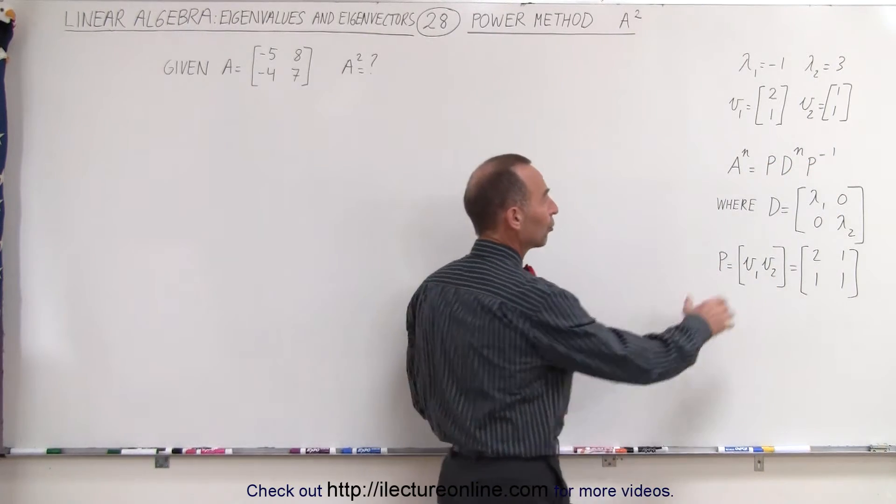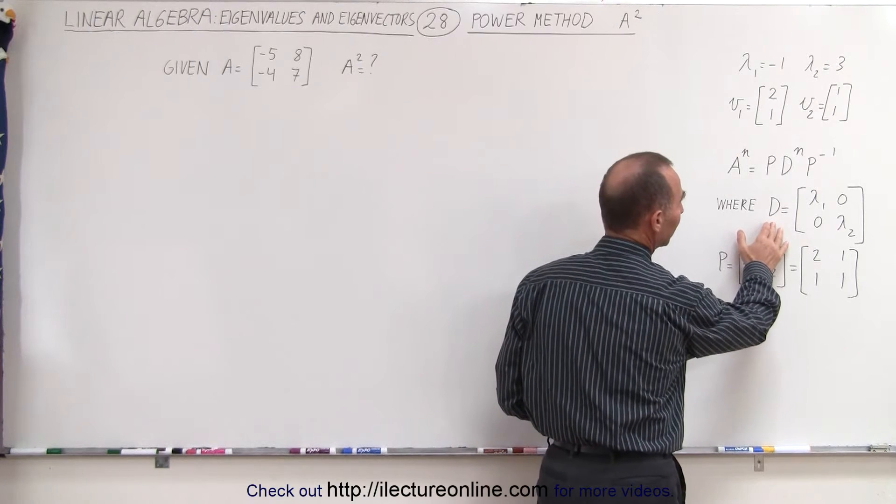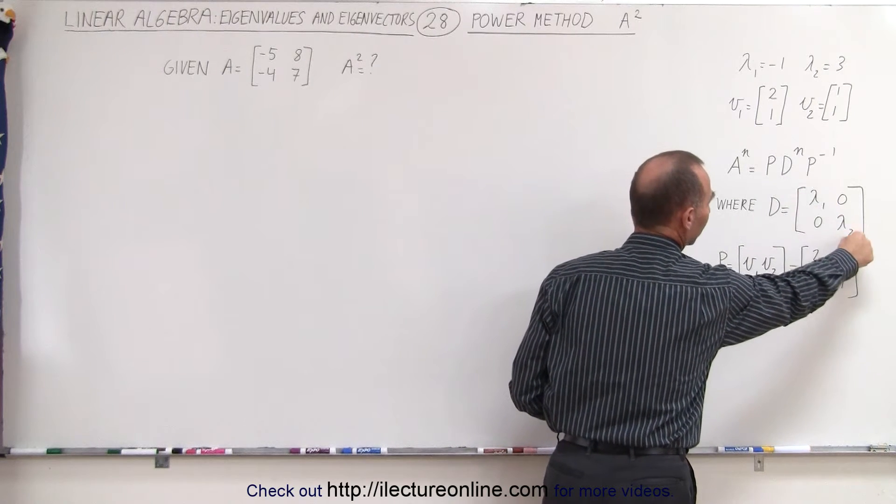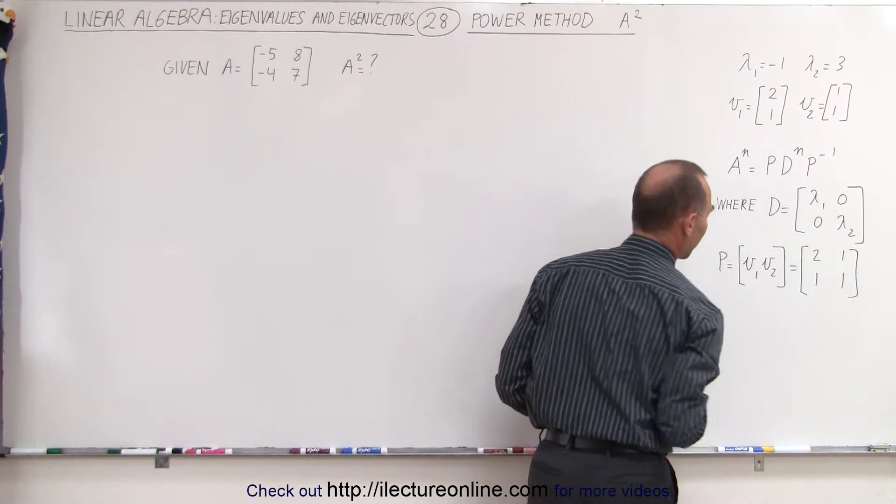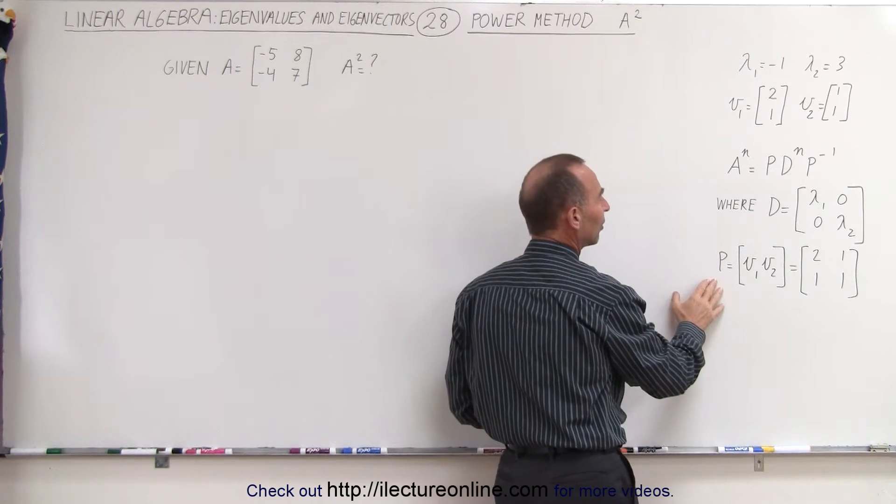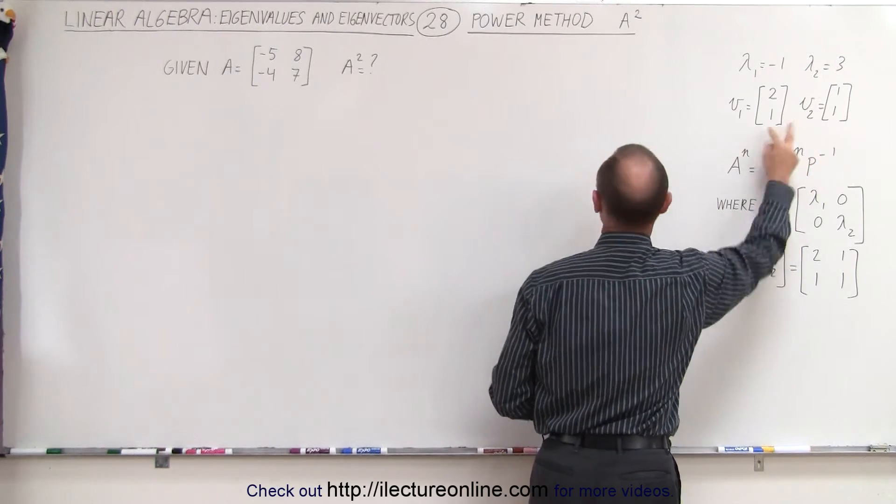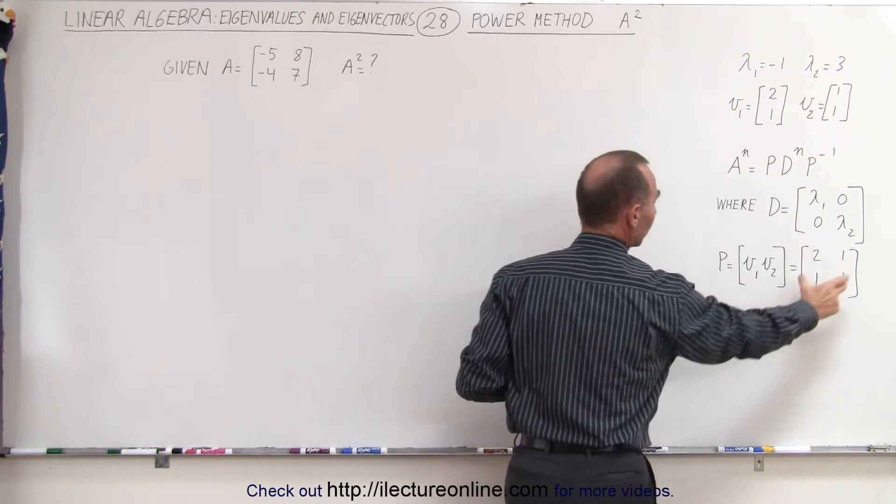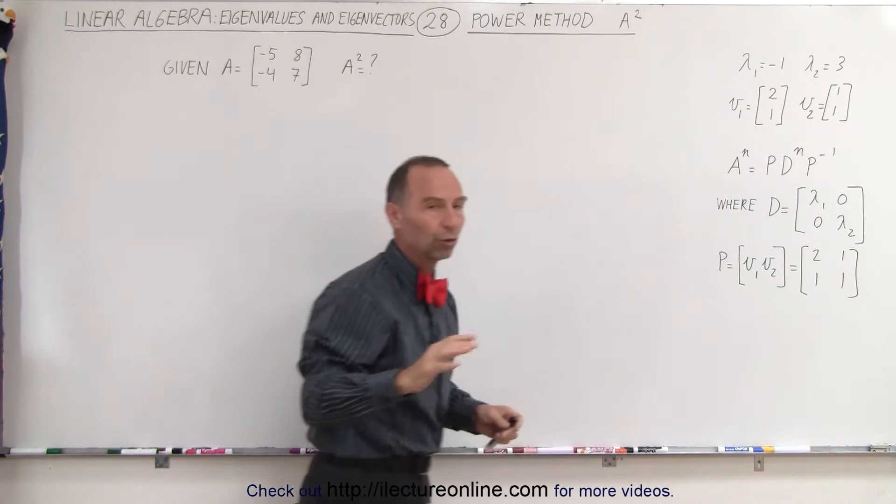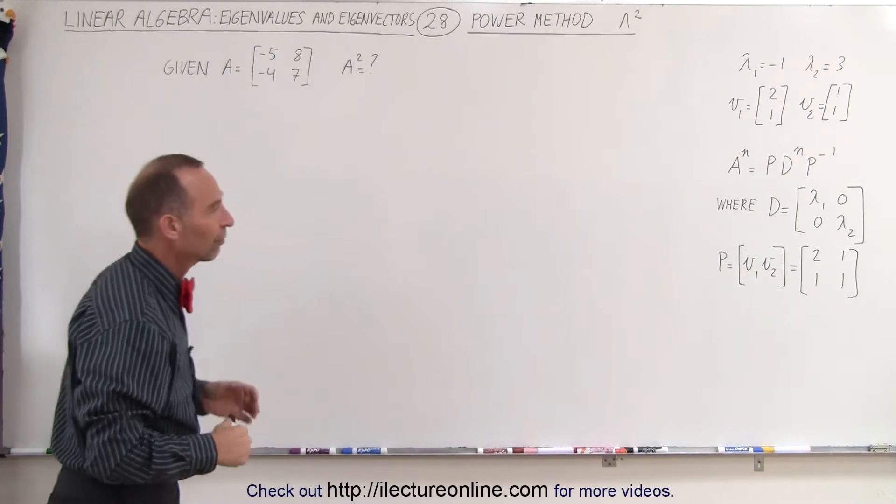Of course, remember that D is simply equal to a matrix that has the eigenvalues across the diagonal and zeros everywhere else, and the P matrix is a matrix of the eigenvectors. So here, these are the two eigenvectors of the given matrix. You can see then that this is the P matrix, and we'll show you in just a moment how to find the inverse of P.